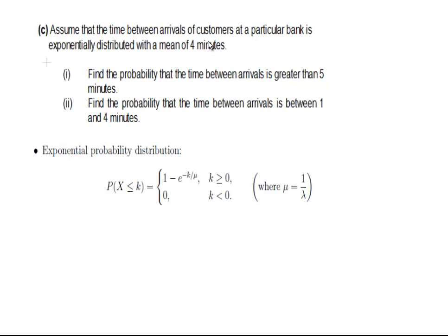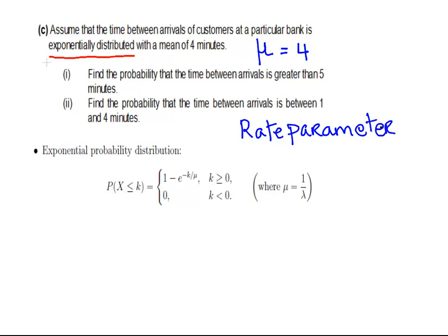The time between arrivals of customers at a particular bank is exponentially distributed with a mean of 4 minutes. Before looking at the questions, let's think about what we're told. We're told that mu equals 4 minutes. Additionally, there's another important parameter called lambda, the rate parameter. Lambda equals 1 over mu, which is 1 over 4.